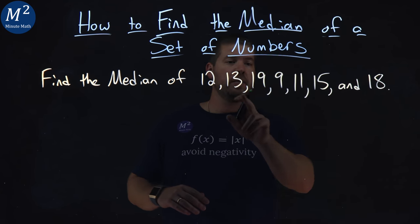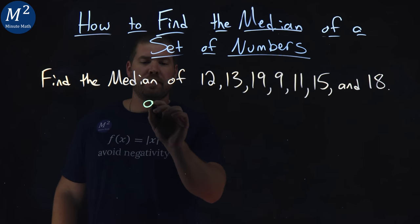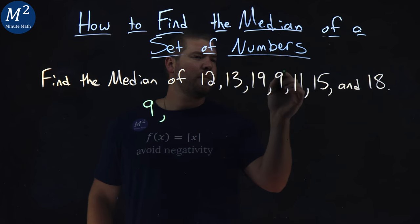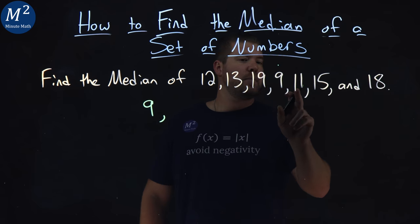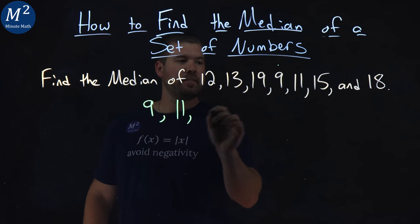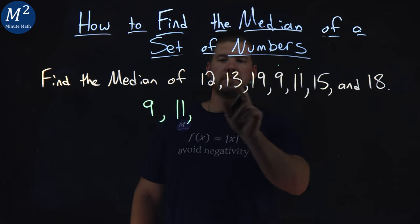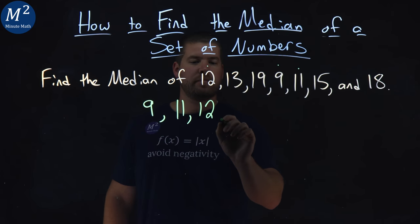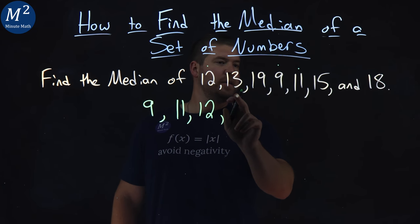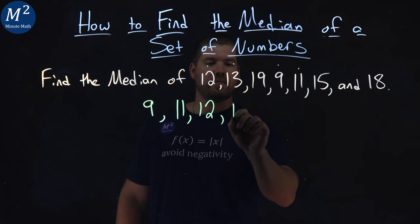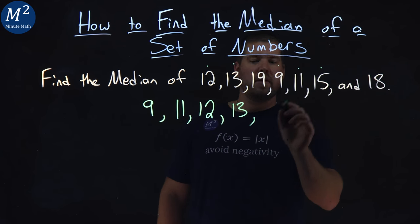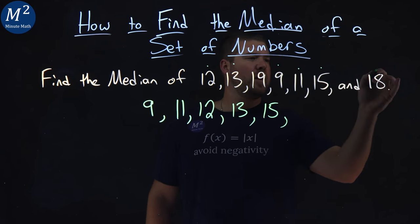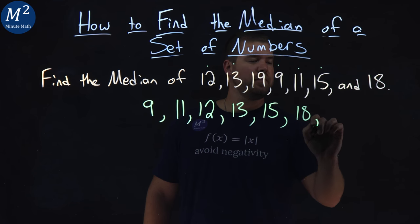So let's go through and look. Our lowest number is 9 — start there. I'm going to put a little dot over it so I know I've used that number. Next number I see is 11, then 12, 13 is next, 15 is after that, then we have 18, and lastly 19.